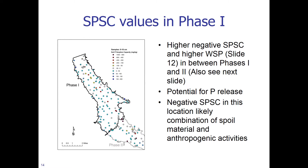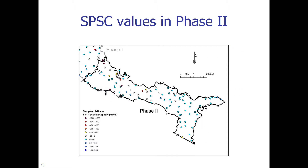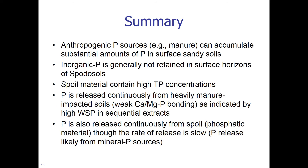Now let us look at the SPSC values in Phase 1. Higher negative SPSC and higher water soluble P between Phase 1 and Phase 2 suggest potential for P release from this location. The negative SPSC is likely a combination of spoil material and anthropogenic activities. If you have a negative SPSC and high water soluble P, you cannot necessarily attribute it to either anthropogenic or natural conditions alone. In Phase 2, very high negative water soluble P values are also observed in the area between Phase 1 and Phase 2.